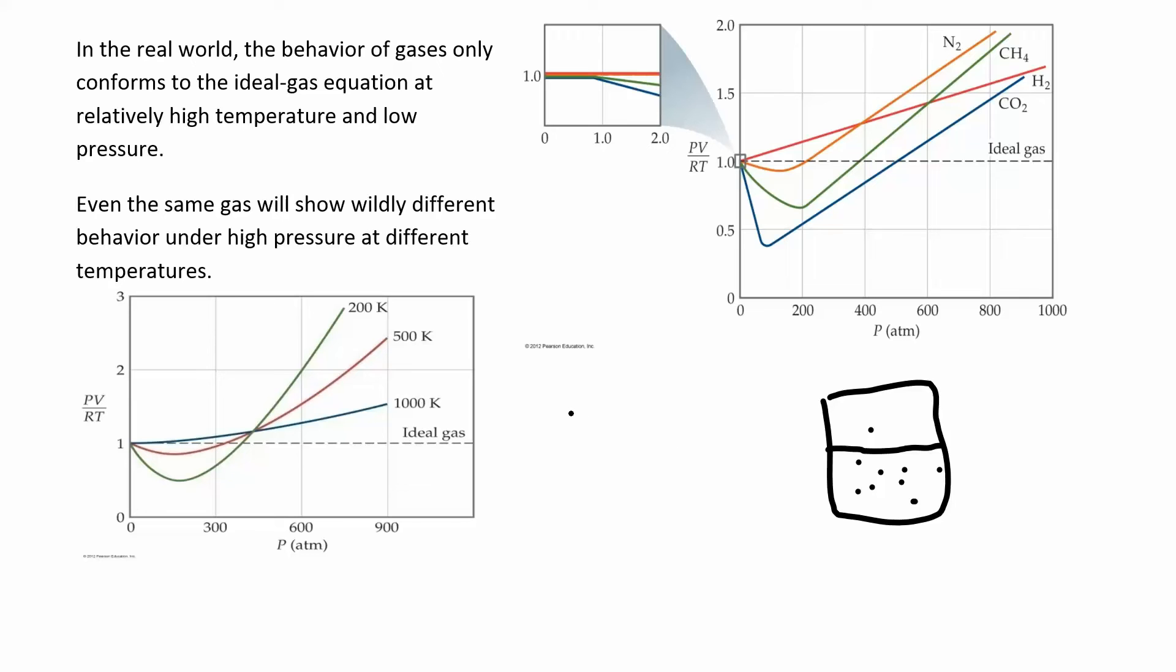Gases behave ideally at high temperature. High temperature means they have a lot of energy, moving really fast, not getting stuck together, they don't see each other. And also at low pressure.